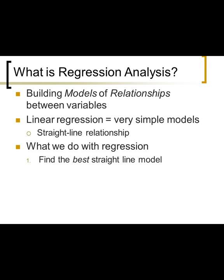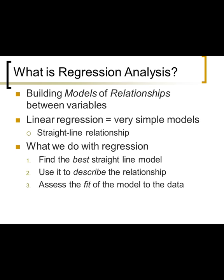We find the best straight line that represents our relationship and call that our model. We use that model to describe the relationship, and we judge how good a fit the model is to the actual data. It's like comparing a mental prototype of the perfect person to a real person in front of you — what are the differences? The model describes an abstract, perfect straight line, and then we see how well it fits our actual data.